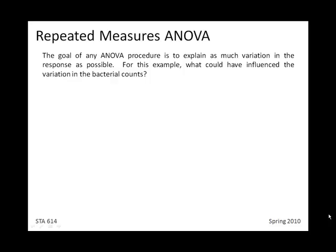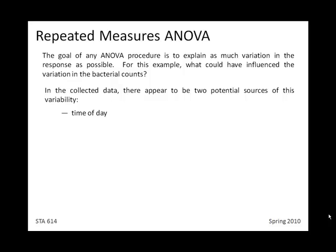The goal of any ANOVA procedure is to explain as much variation in the response as possible. Our response is the bacterial count, and we want to explain why those bacterial counts varied so much. In this example, there are actually two potential sources of variability. The first is time of day — you start the day with clean scrubs, and by the end of the day anything could have happened, so bacterial count is likely to change as the day progresses.